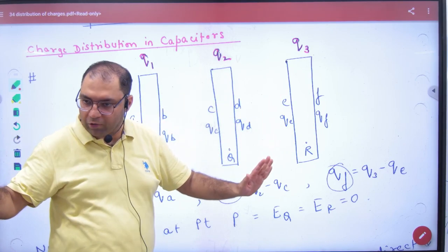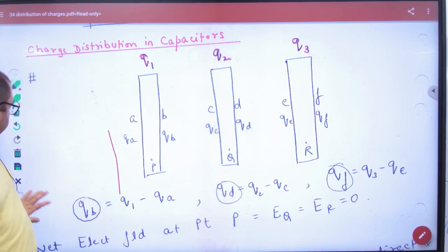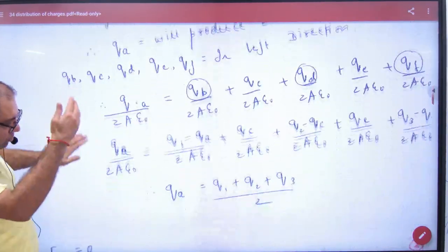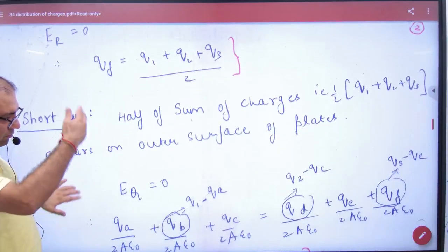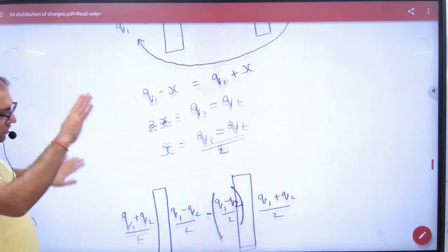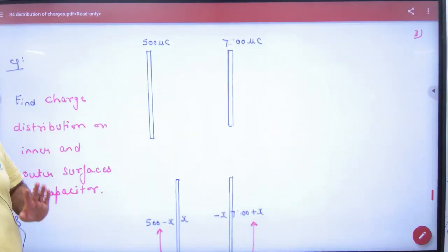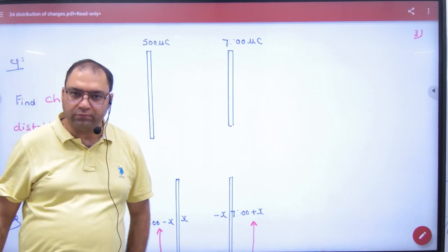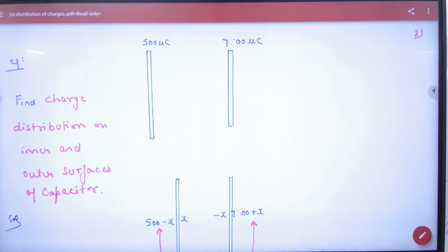We will see this topic. We will do a shortcut. And this shortcut that came from this proof. What is the shortcut? The shortcut is that if you have two plates. Okay. Let's see this next video.